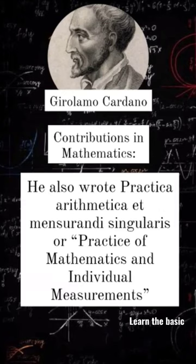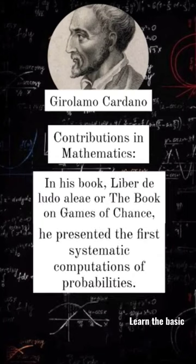He also wrote Practica Arithmetica ad mensurandi singularis, or Practice of Mathematics and Individual Measurements. In his book Liber de Ludo Alea, or The Book On Games of Chance, he presented the first systematic computations of probabilities.